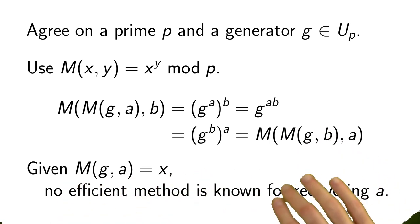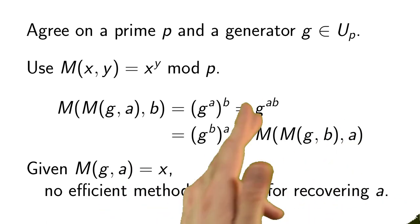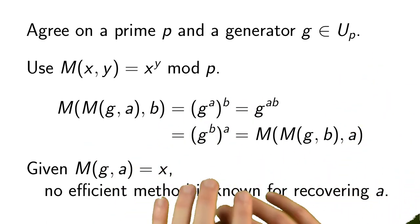The key feature, though, is this last condition that unlike the case of multiplication where I can undo multiplication just by dividing, here, in order to undo this exponentiation, I would have to do a discrete logarithm. I'd have to be able to take logs modulo P. And there's no efficient method known for doing that.